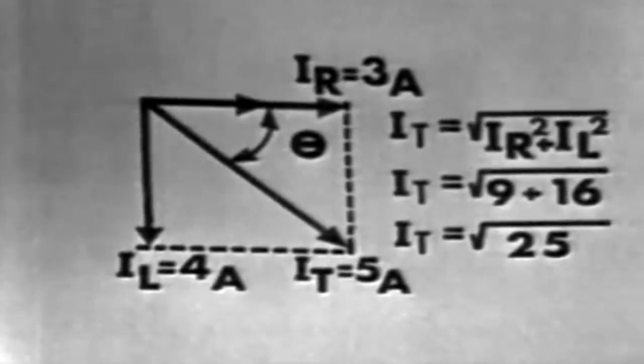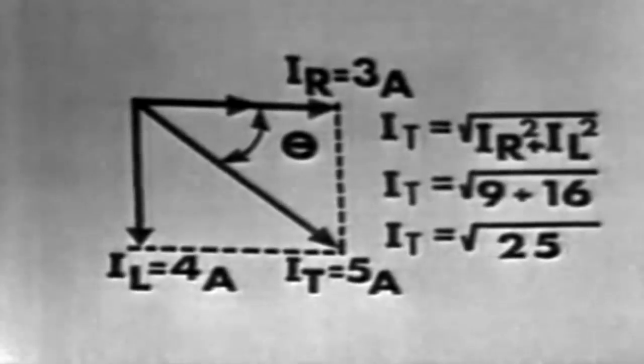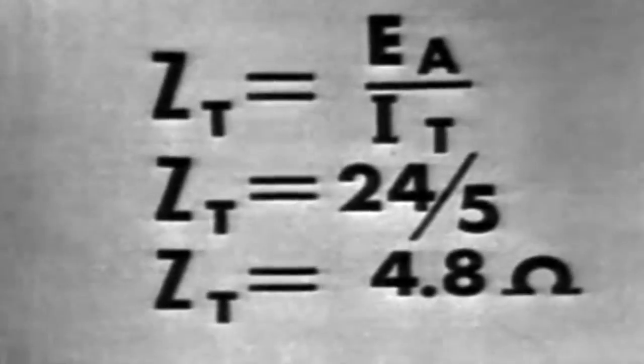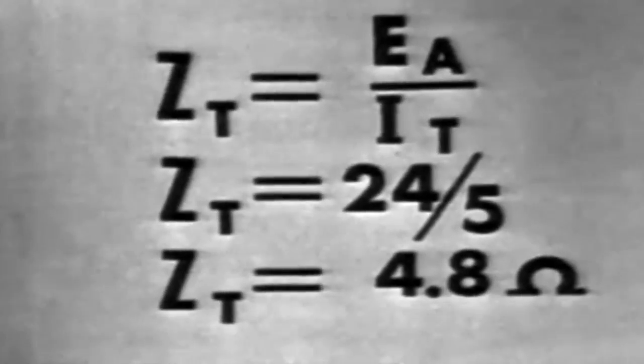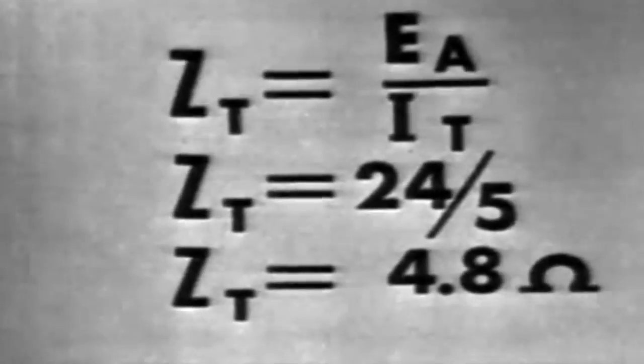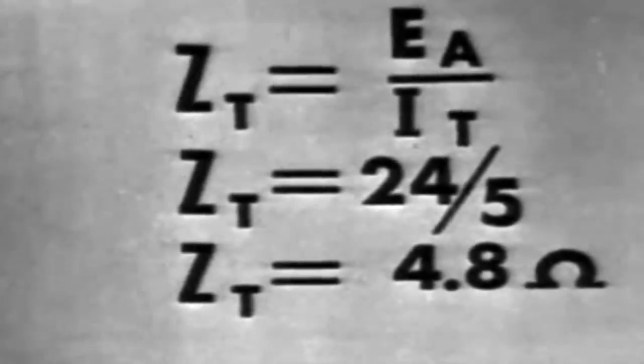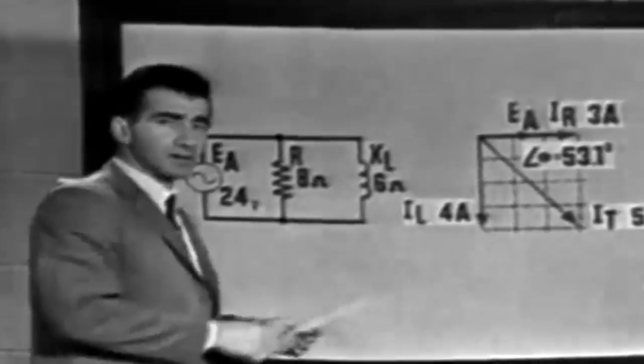Now, of course, total current, once total current is known, the total impedance of the circuit may be found simply by applying Ohm's law. ZT equals EA over IT, or 24 over 5. The total impedance is equal to 4.8 ohms, which you will note is less than the smallest impedance in the circuit.